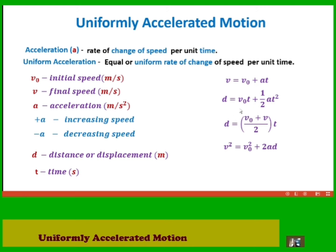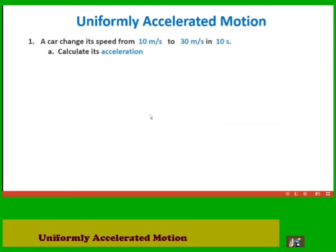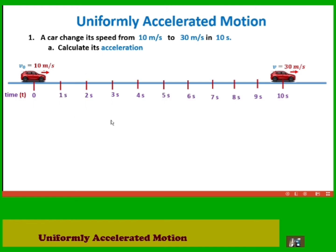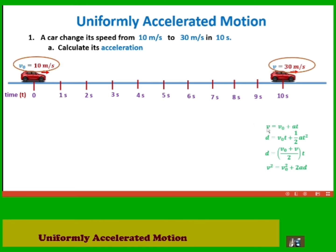For example, a car changes its speed from 10 meters per second to 30 meters per second in 10 seconds. Part A: calculate its acceleration. The car is initially moving at 10 meters per second and after 10 seconds it moves at 30 meters per second. From the equations of uniformly accelerated motion, we choose the most appropriate equation. Equation 1 is appropriate because it contains initial speed, final speed, and time, which allows us to solve for acceleration.